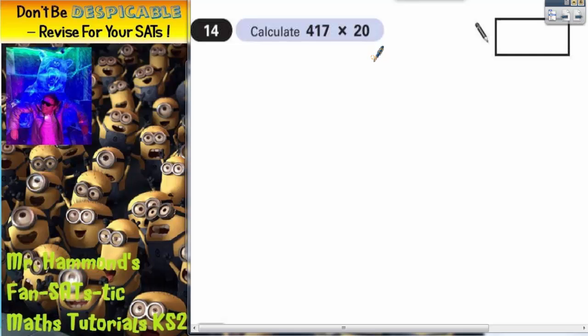Now they have been very kind to us here because they could have said times by 23 or 25 or 22, but the fact that they've said times by 20 is going to help us because all we've actually got to do is cover up the 0, times 417 by 2, and then we can put the 0 back on at the end to make it times by 20.